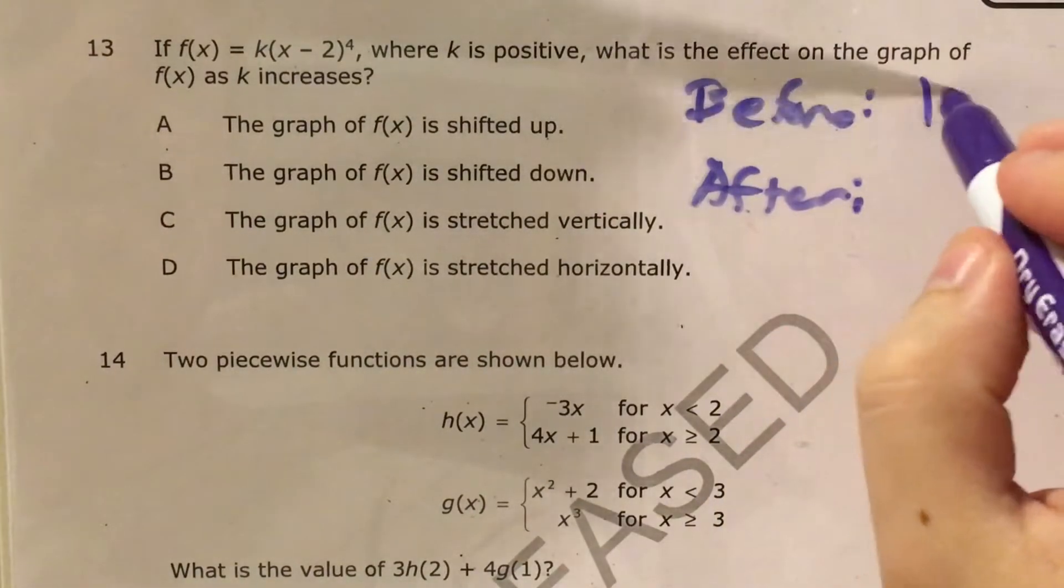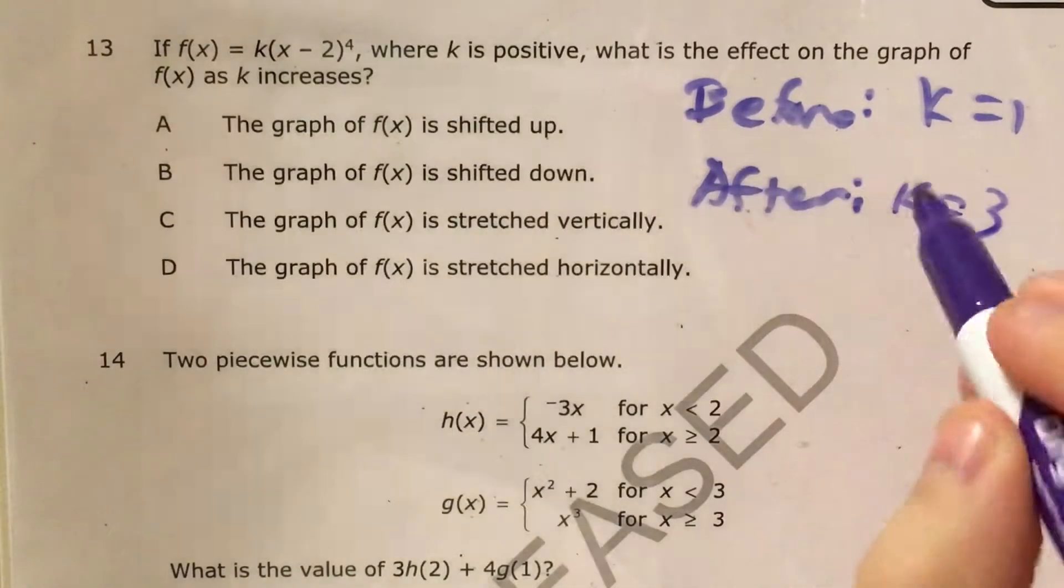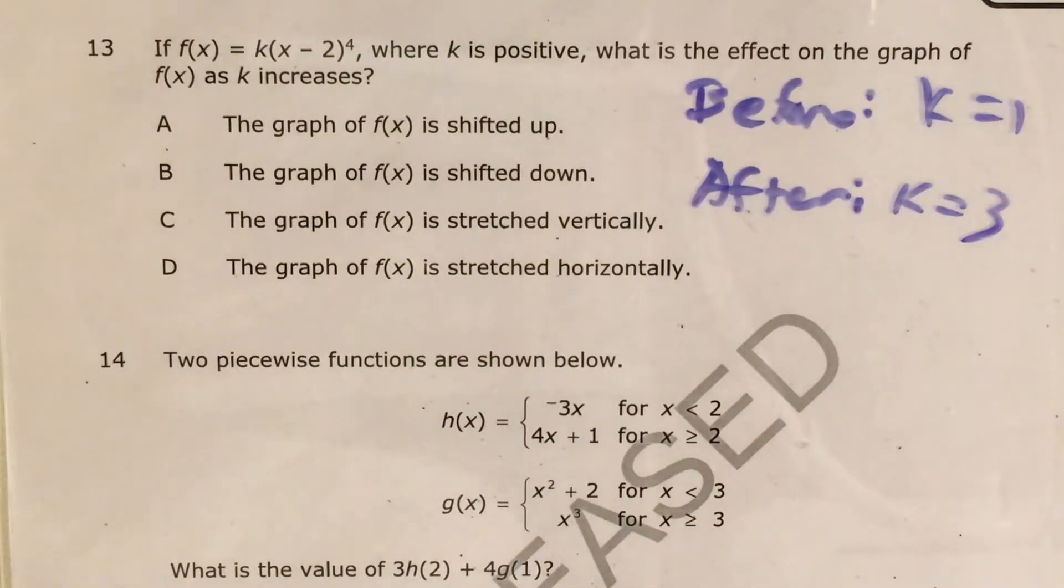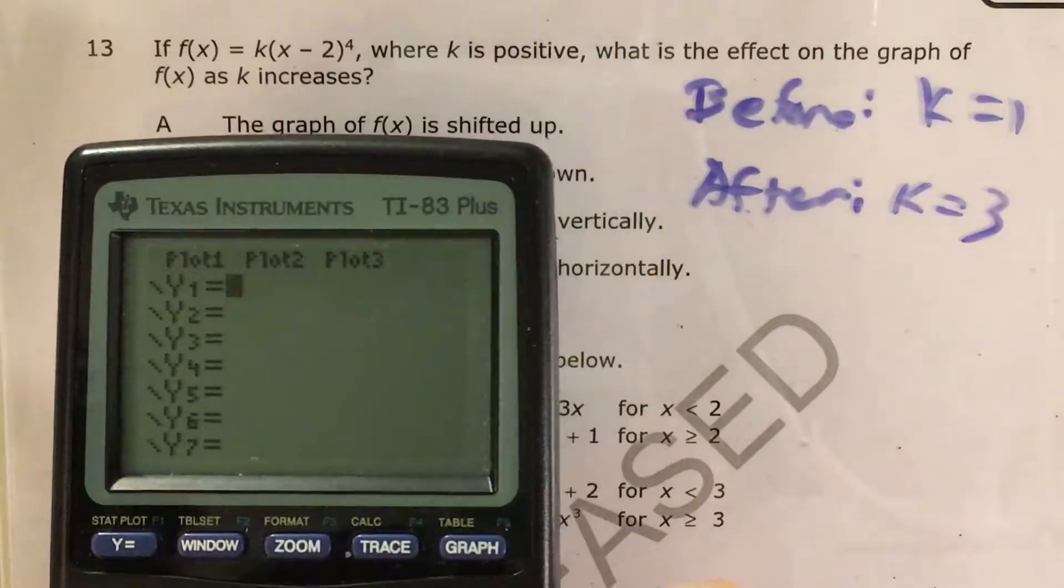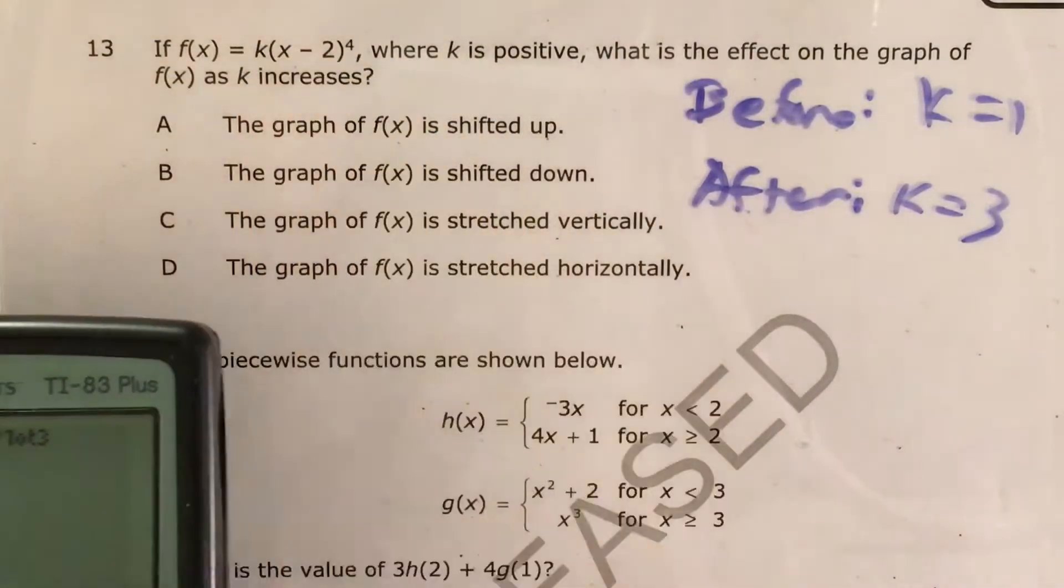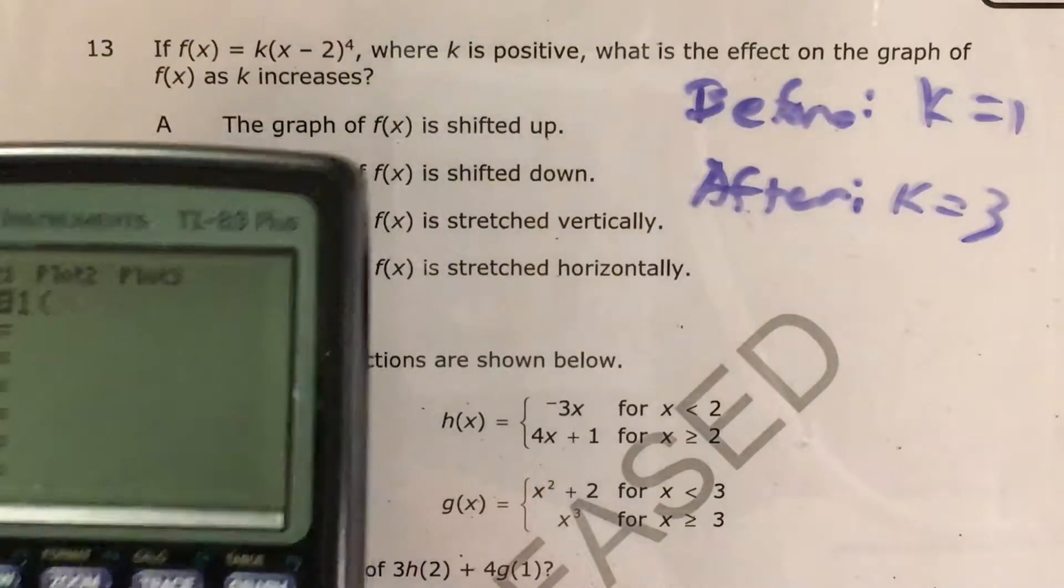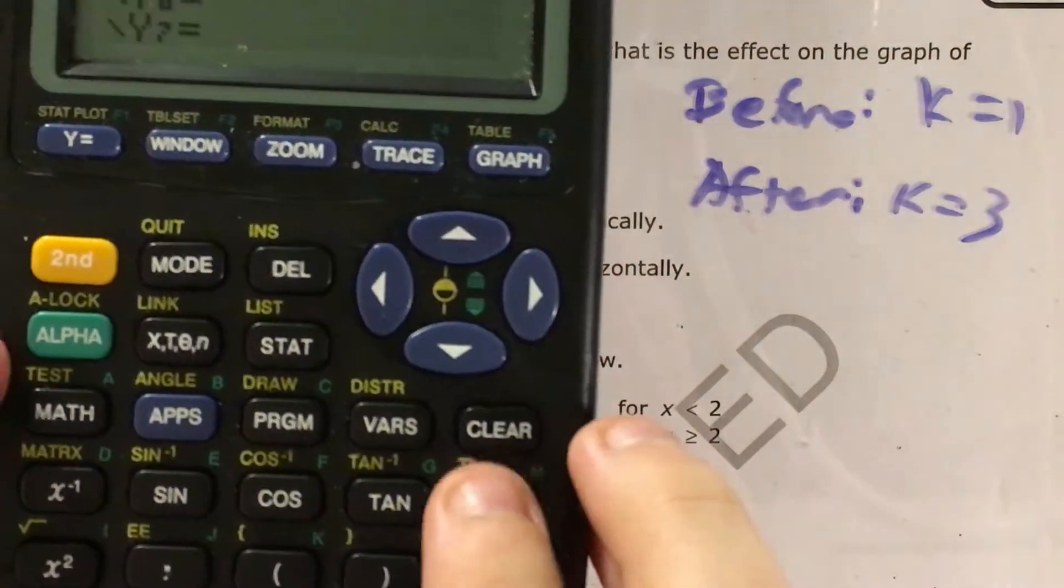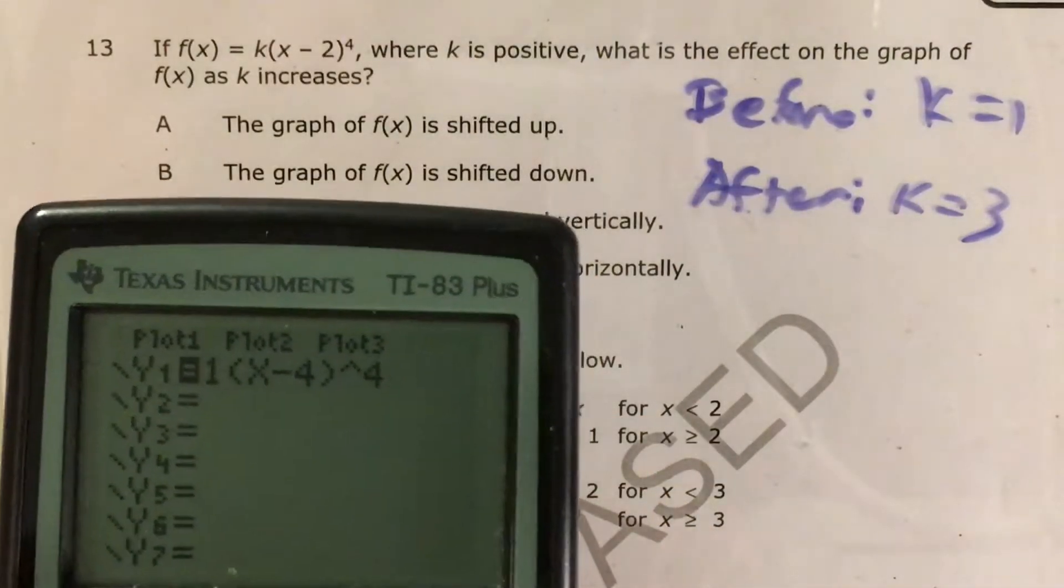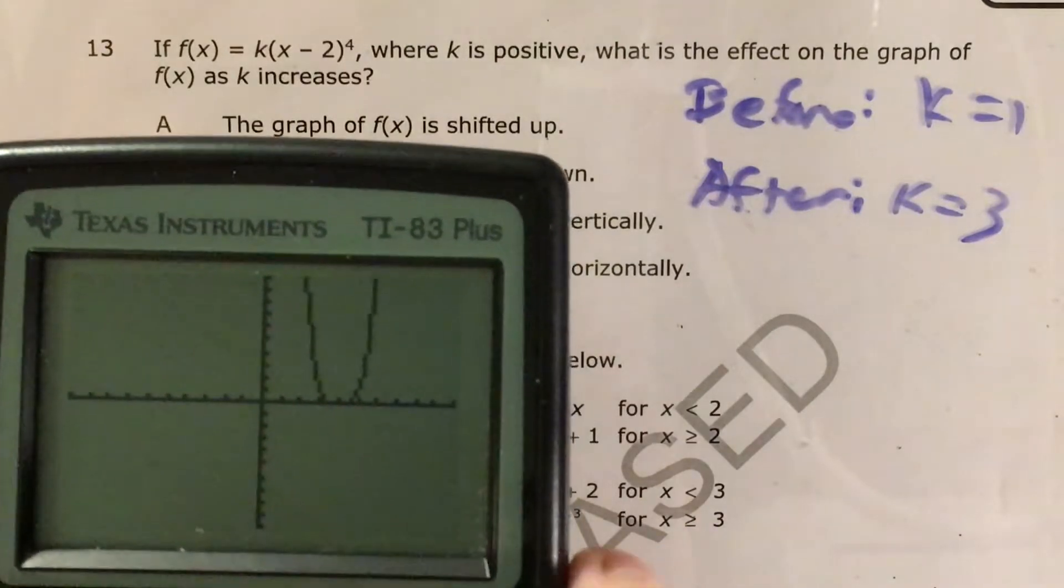So for before, let's use k equals 1, and for after, let's use k equals 3. So here's my calculator. I'm at my y equals screen, and I'm going to go ahead and type in this function, except where k equals 1. So that's 1 times x minus 4 raised to the 4th power. And this little caret here is how I put that exponent of 4 in. So I graph it, and it looks like this.